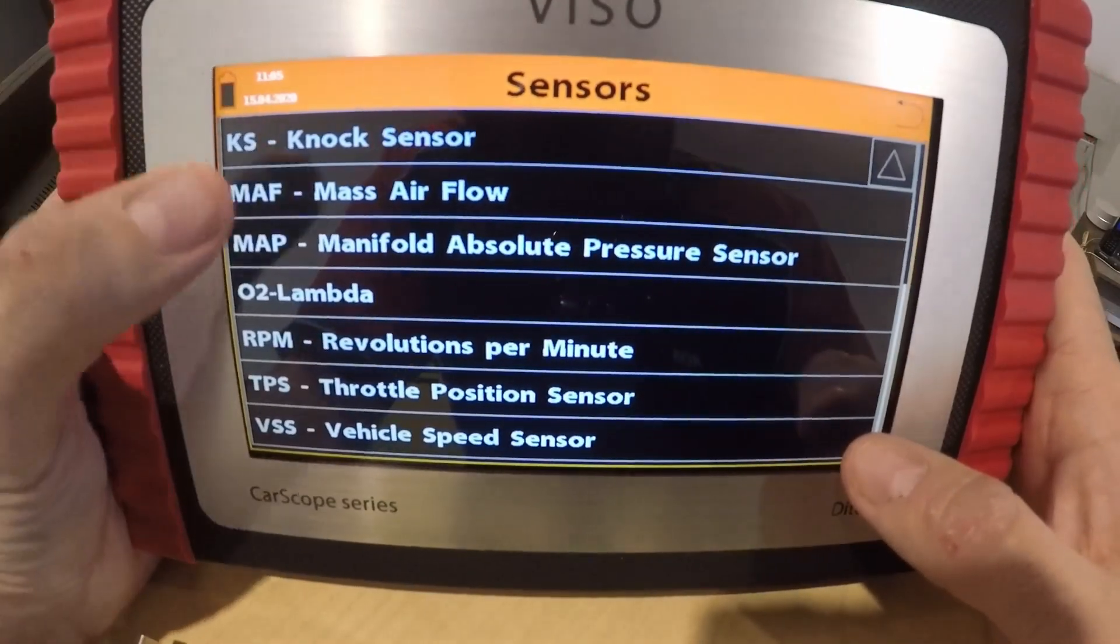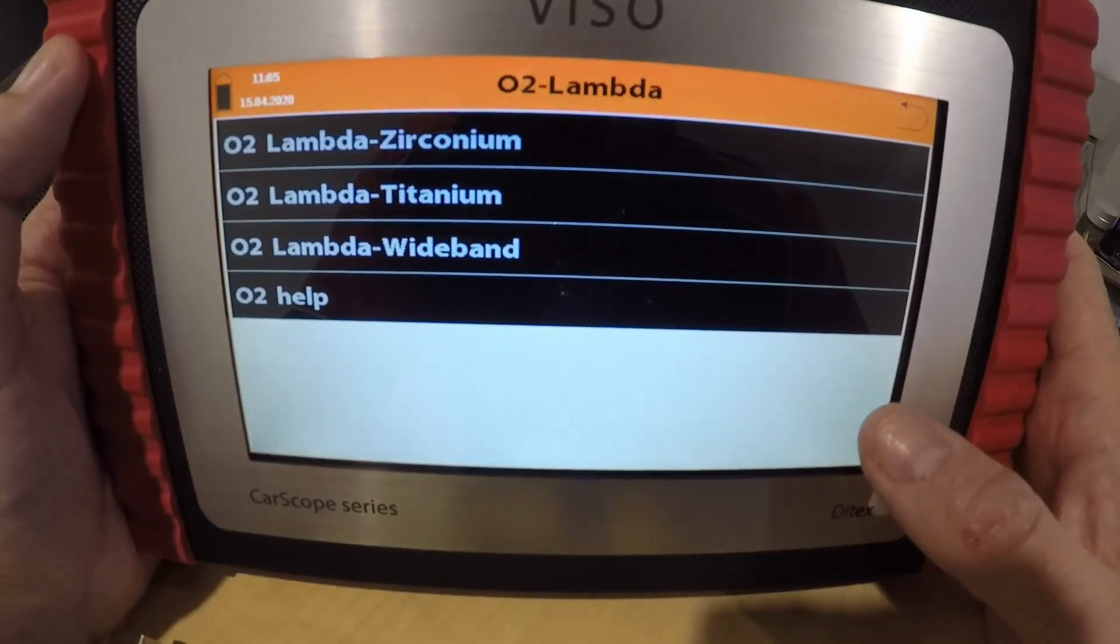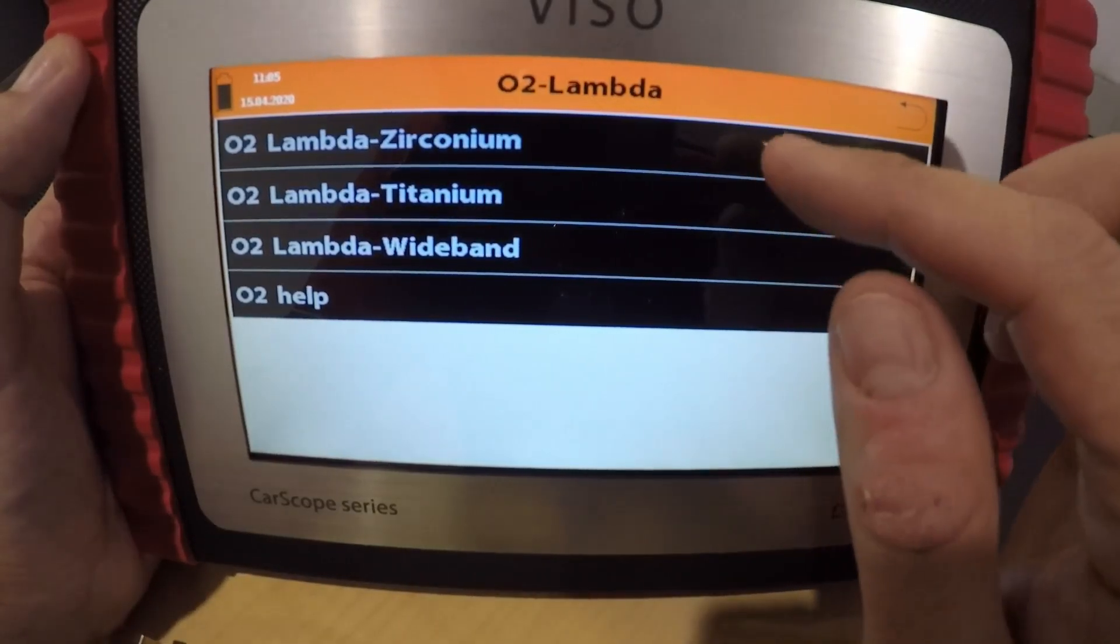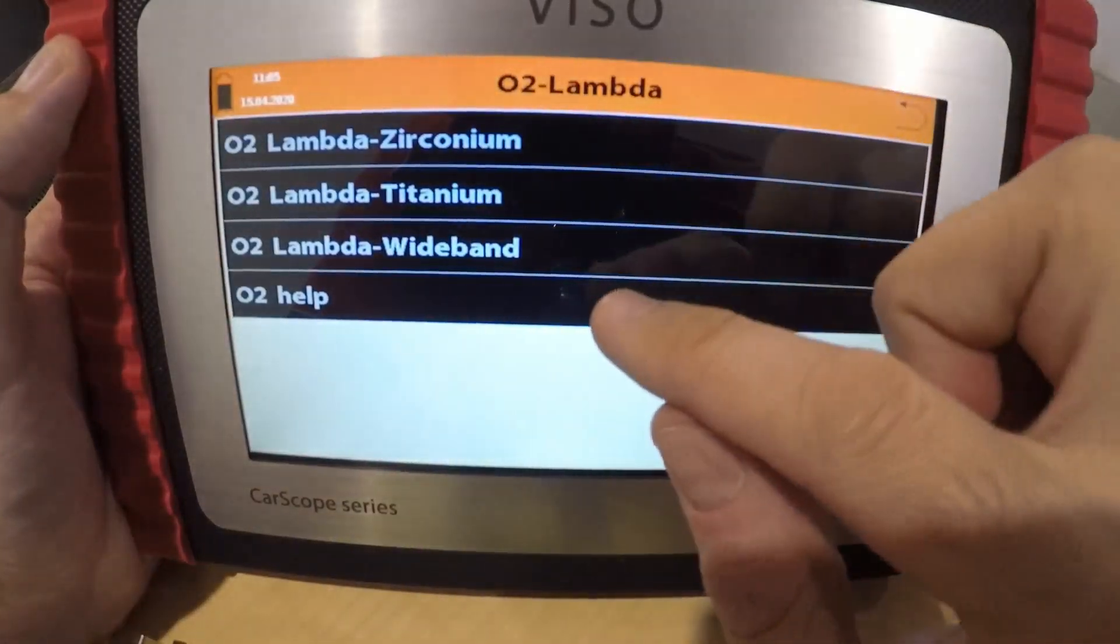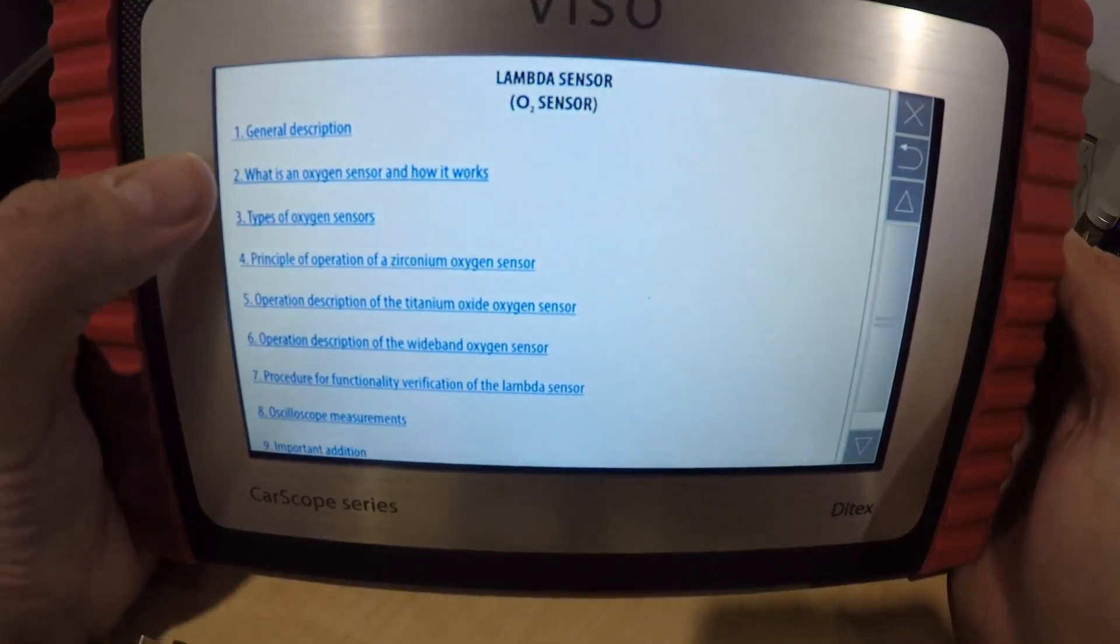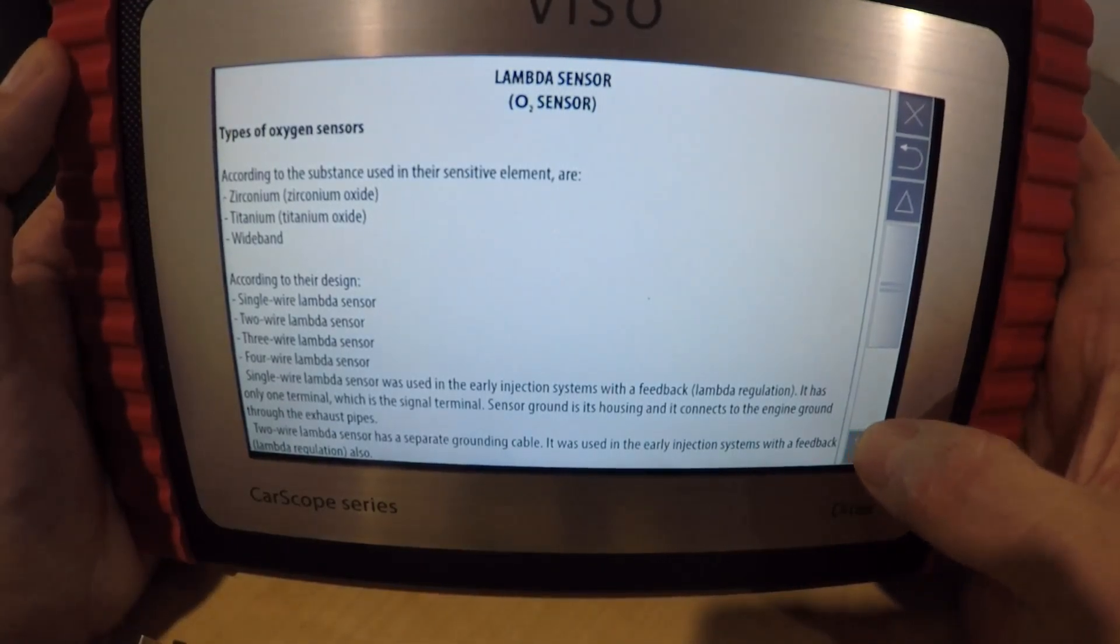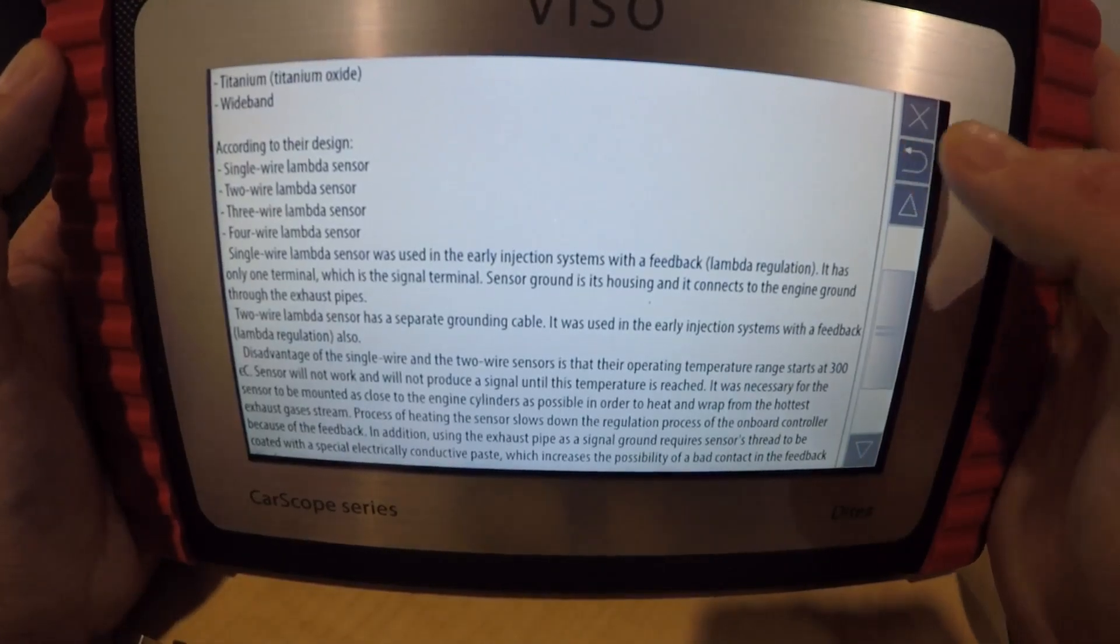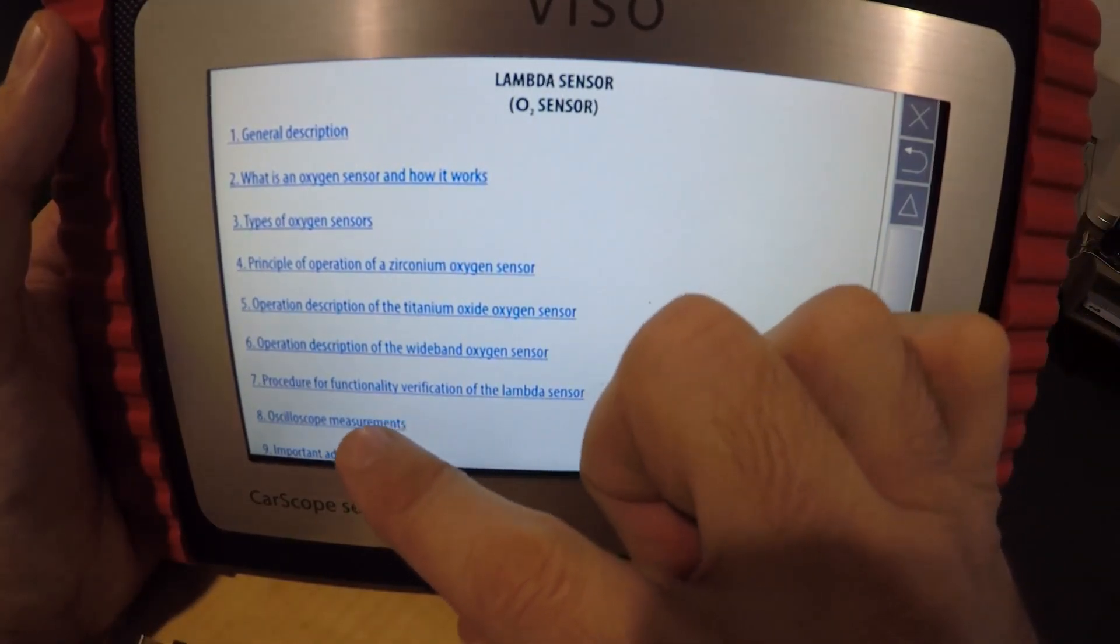Now so let's see what else they've got in case anyone wants to know. O2 sensors, easy. Something that a lot of people don't really know how to diagnose correctly. Let's go into O2, let's go. It's got the O2 help in there, types of oxygen sensors, it's got oscilloscope measurements.